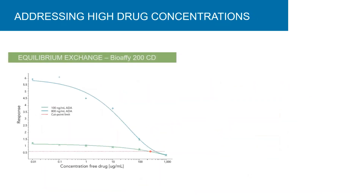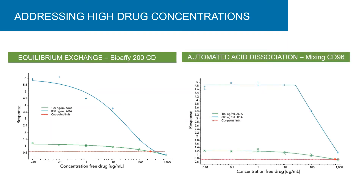This example shows how Gyrolab immunoassay options for minimizing drug interference can maximize assay performance. On the left, an ADA assay showed drug interference at high concentrations where the signal decreased with increasing concentration of free drug for the 800 nanogram per mL ADA assay. The graph on the right, utilizing automated acid dissociation in the mixing CD96, demonstrated linear signal response up to 50 micrograms per mL.